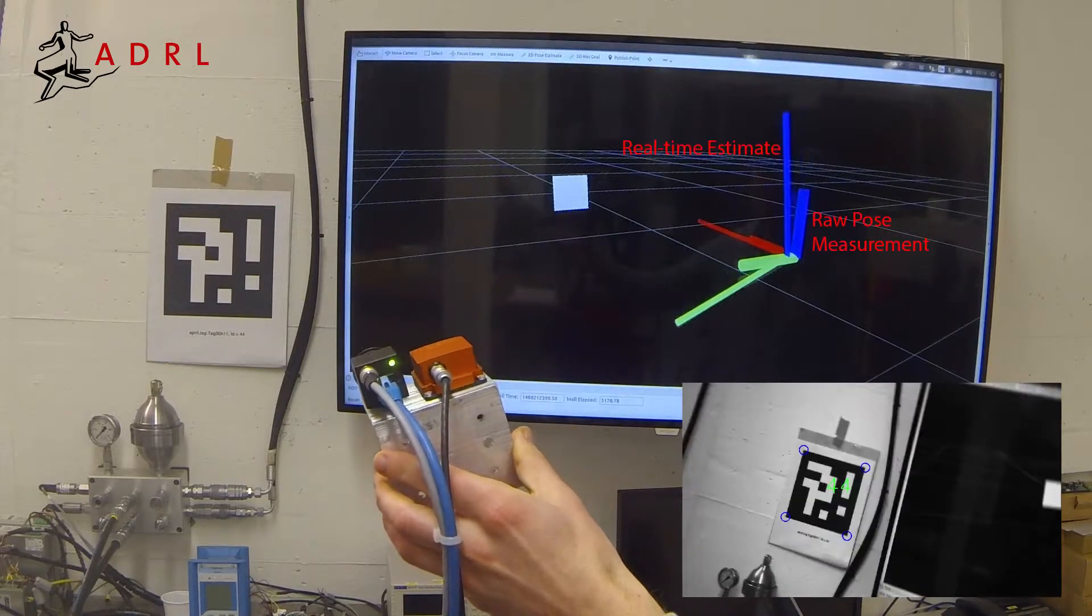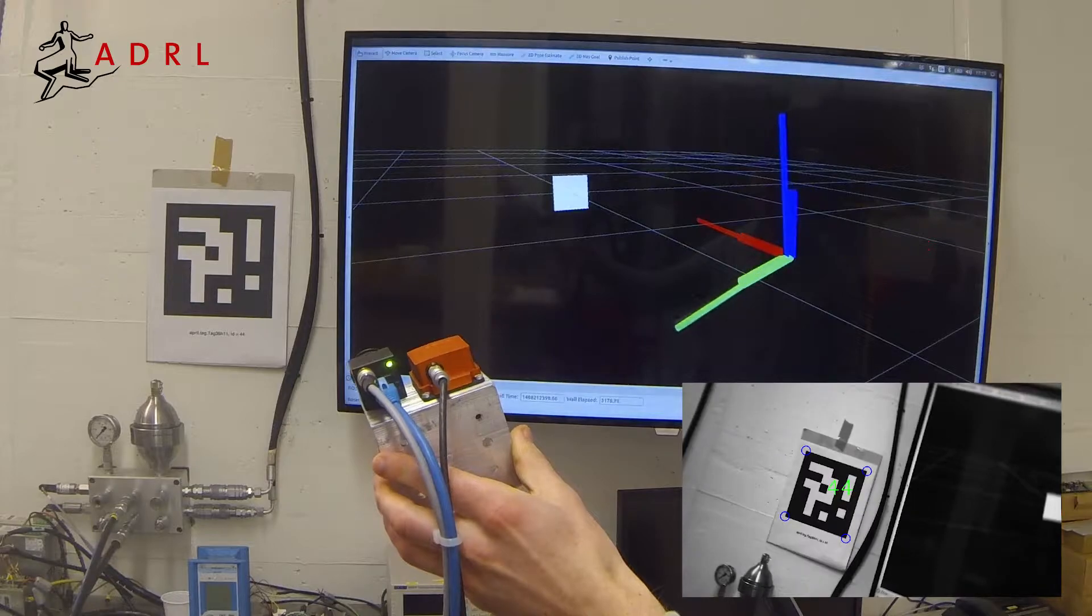By fusing measurements from a camera and inertial measurement unit, we estimate the pose and velocity of this sensor head at 1 kHz in hard real time.